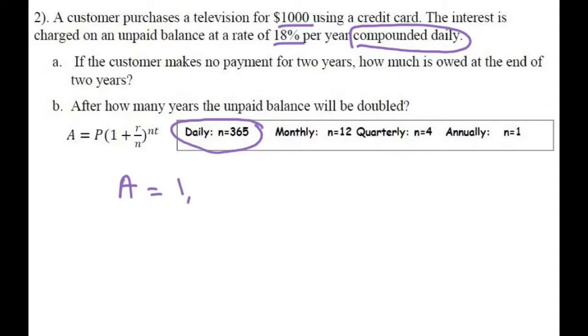You do 1 plus the interest rate is 0.18, and our n is 365 here because it's daily.